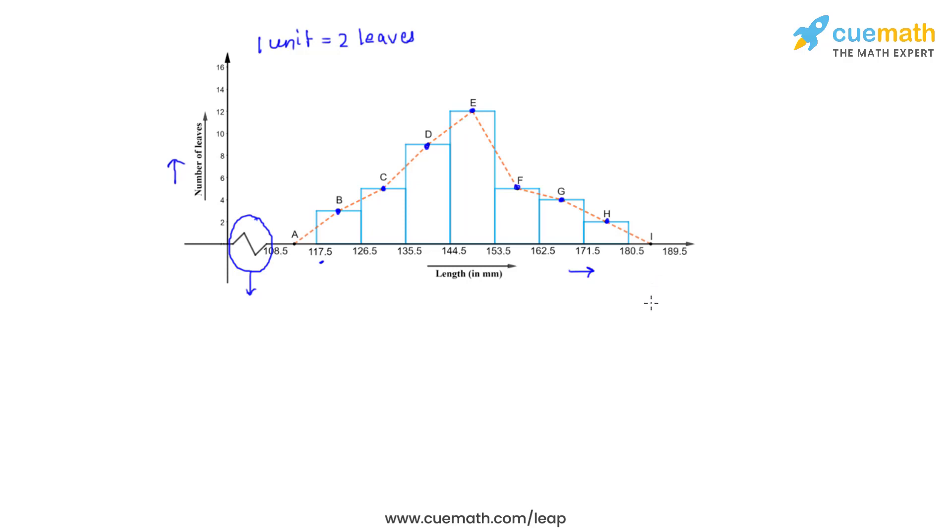To make the graph look like a polygon we assume that there is a class before the class interval 117.5 to 126.5 whose frequency is zero and the midpoint of that class is A. Also similarly we have assumed that there is a class after the class interval 171.5 to 180.5 with zero frequency whose midpoint is I. Now all the midpoints that we have in the graph are joined by the dotted lines and this is the frequency polygon.